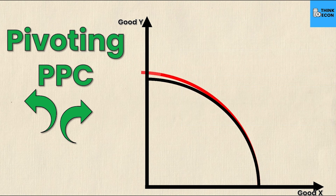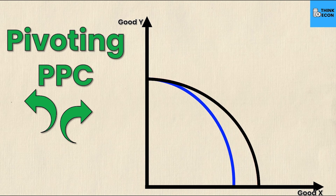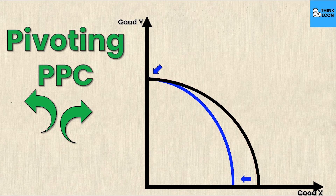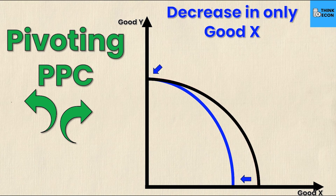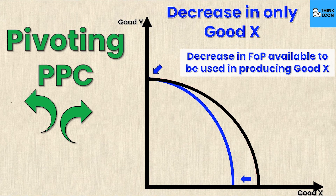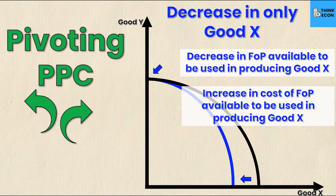Now let's look at another possible scenario. Here good X has moved towards the origin while good Y has not changed, meaning the total amount of good X I can produce has decreased with no change in good Y — a decrease in only good X. This could happen due to a decrease in the factors of production available for good X, or an increase in the cost of those factors for good X. This does not impact good Y whatsoever.